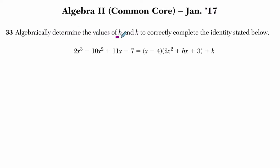They want us to algebraically determine the values of h and k, which you can see right here is h and k, to correctly complete the identity stated below. These two expressions are equal, that's an identity, so in other words I want you to solve for h and k. How would I do that?